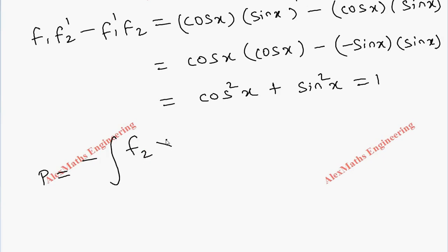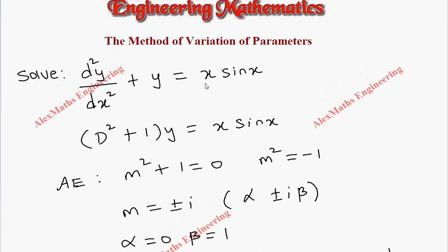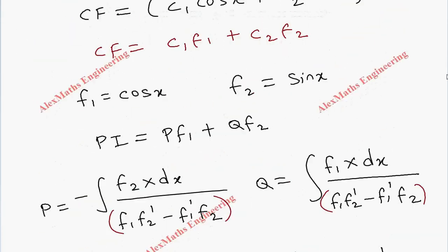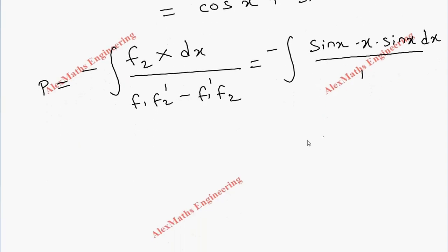Now for p: p = -∫(f₂ · X dx) / 1. Here f₂ = sin x and X = x sin x, so we have p = -∫ x sin²x dx.